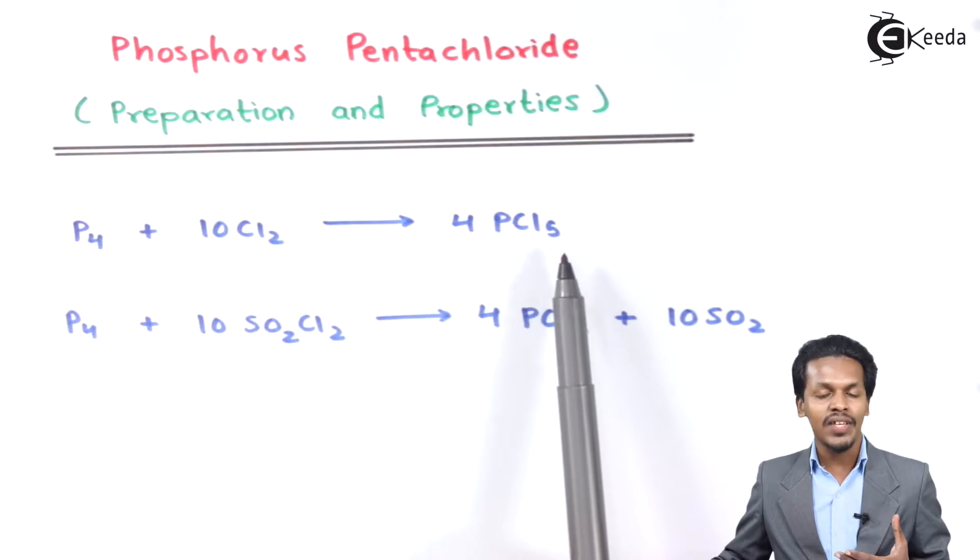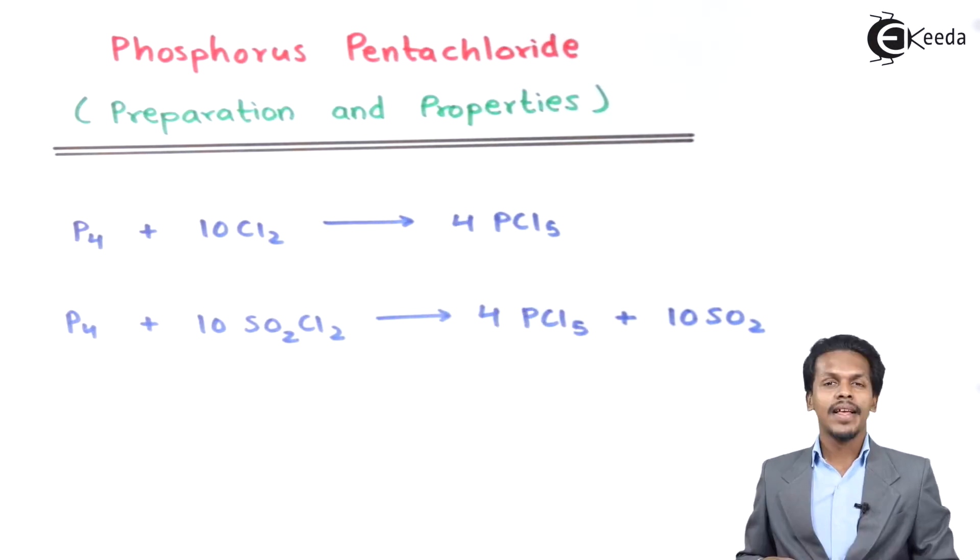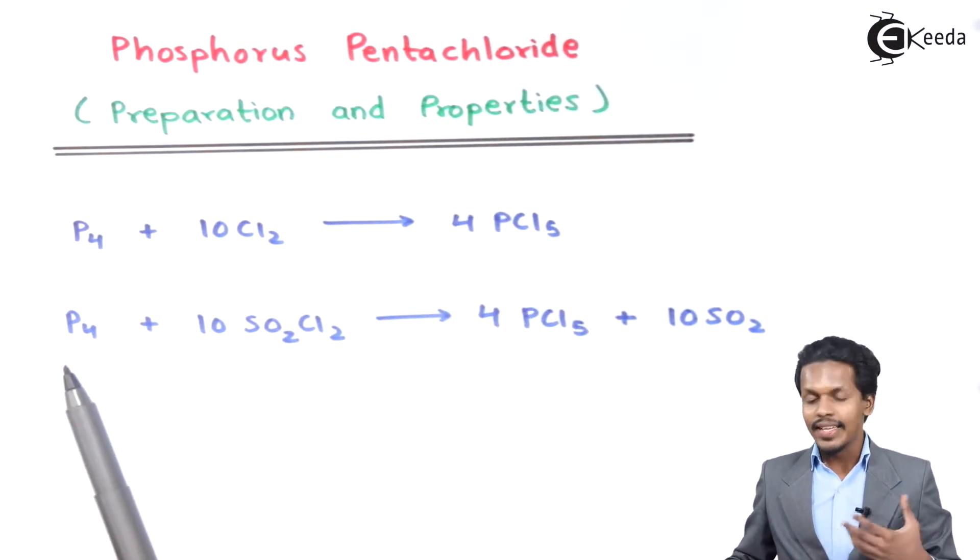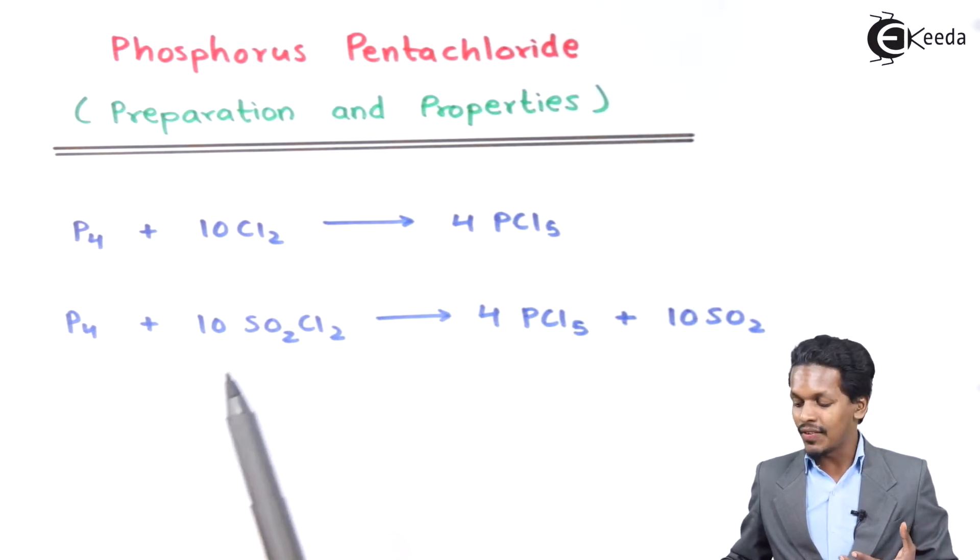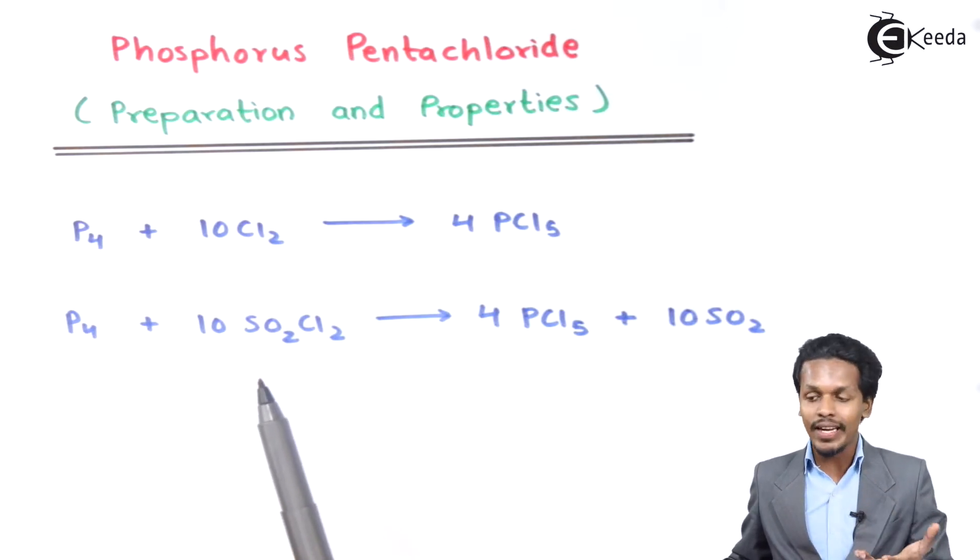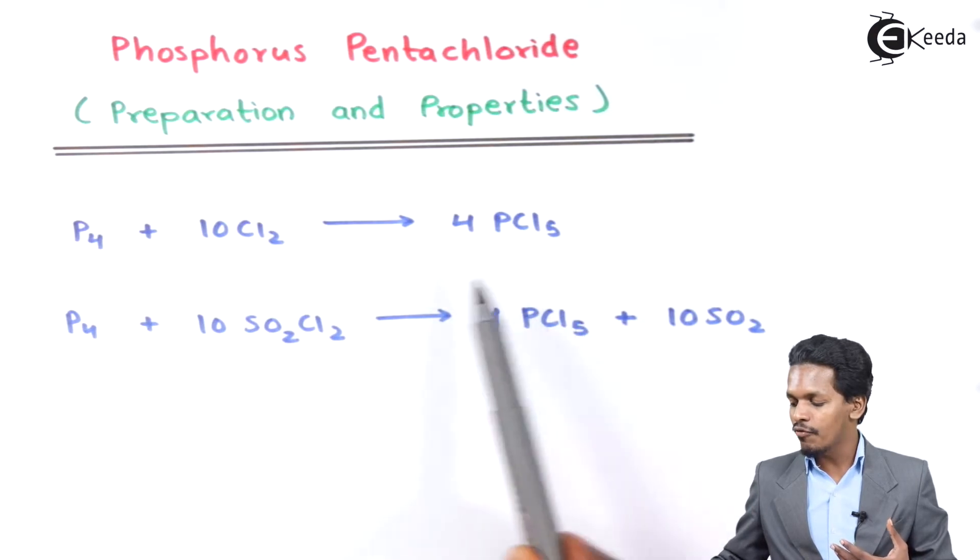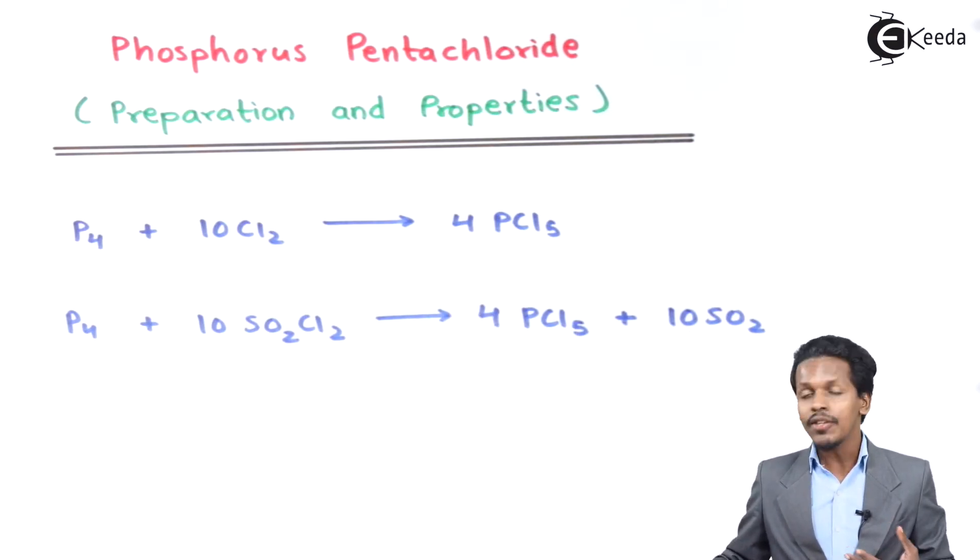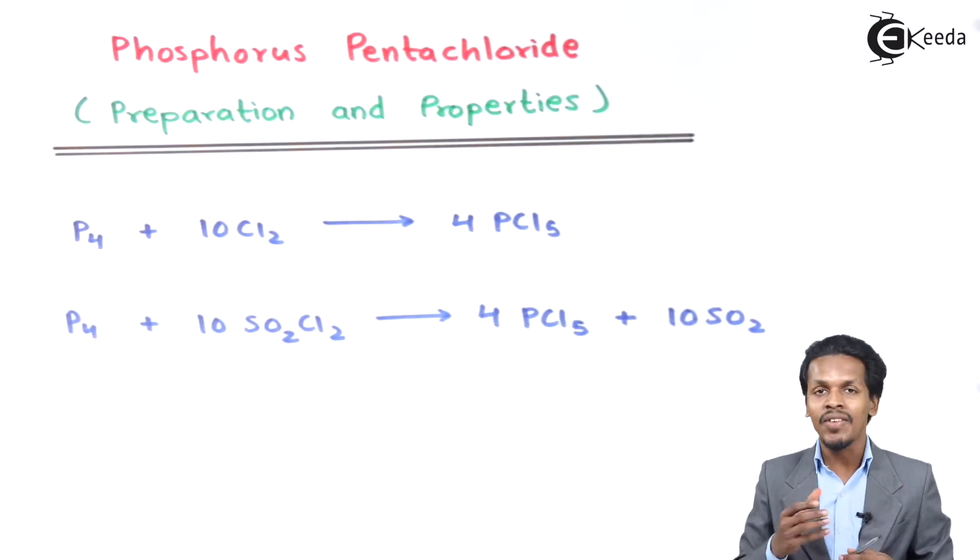Now the next reaction: when white phosphorus, P4, is reacted with 10 moles of SO2Cl2, that is sulfuric chloride, it forms 4 moles of PCl5 along with 10 moles of SO2. Therefore, these are the two methods where we can obtain PCl5. Now let me talk about the chemical properties of PCl5.